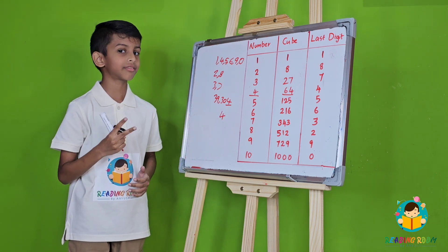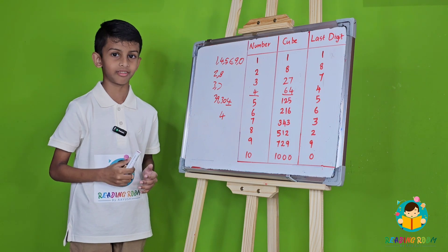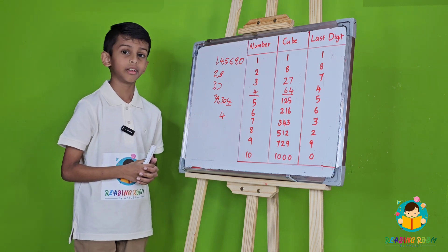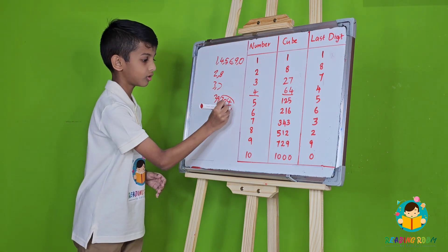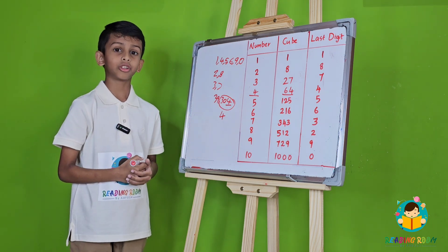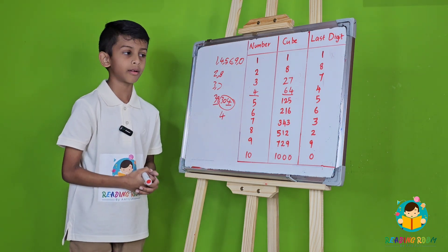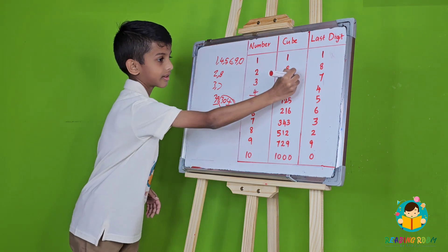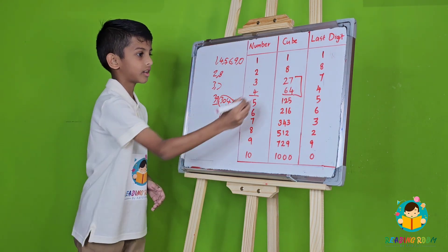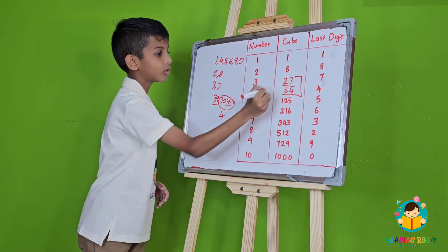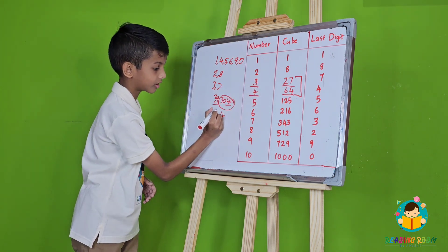Now for the second step, we have to ignore the last 3 digits. Here, in this case, the last 3 digits are 3, 0, and 4. And for the last step, we are left with 39, which is between the numbers 27 and 64 and is closest to 27 without going over, which is the cube of 3. So we will write 3.